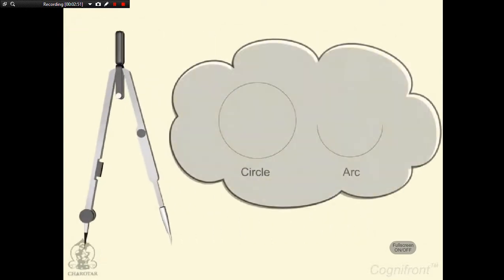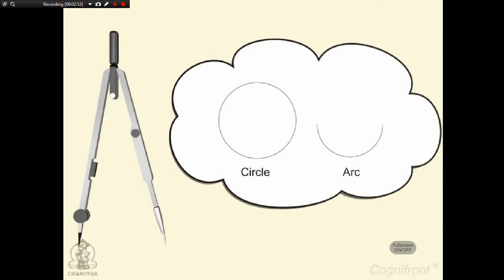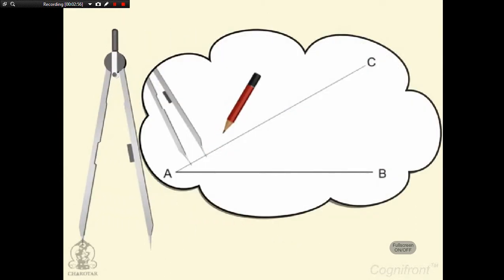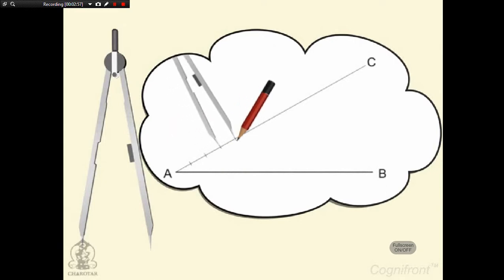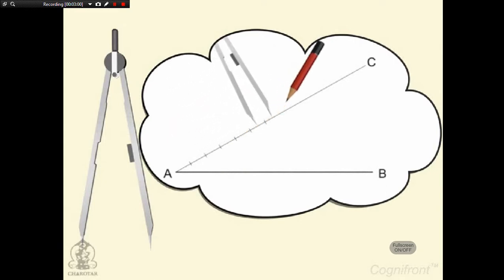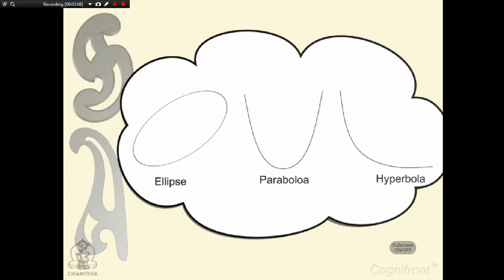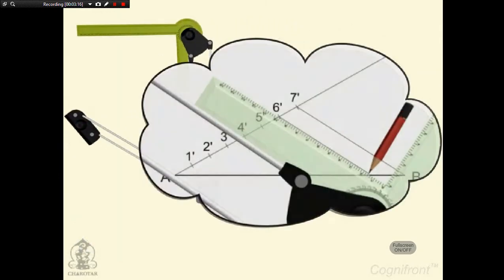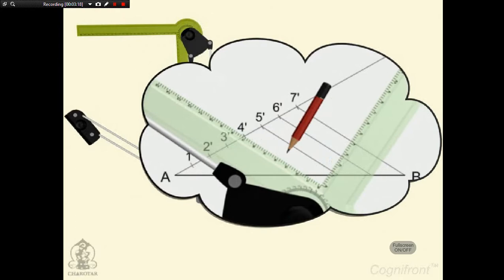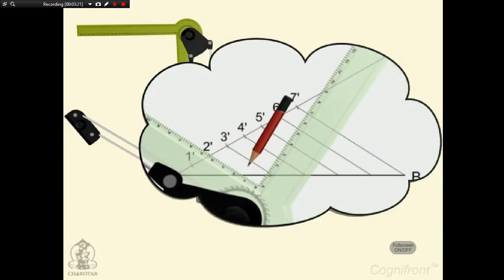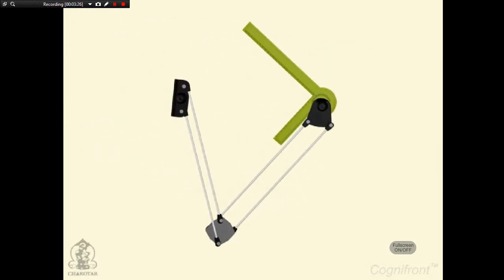The compass is used for drawing circles and arcs. The divider is a little different with both legs made of steel and is used for transferring distances. Another interesting tool is French curves. They are used to draw irregular curves such as ellipses, parabolas, hyperbolas and the like. The drafter is a very useful tool for drawing parallel lines at any given inclination. It has a scale as well as protractor inbuilt.